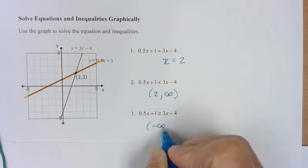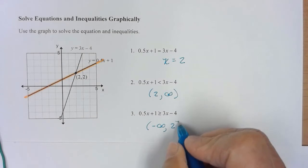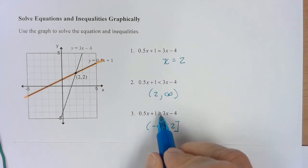So from negative infinity all the way to 2. And I'm going to include it because this has got to be greater than or equal. So it is equal at 2.